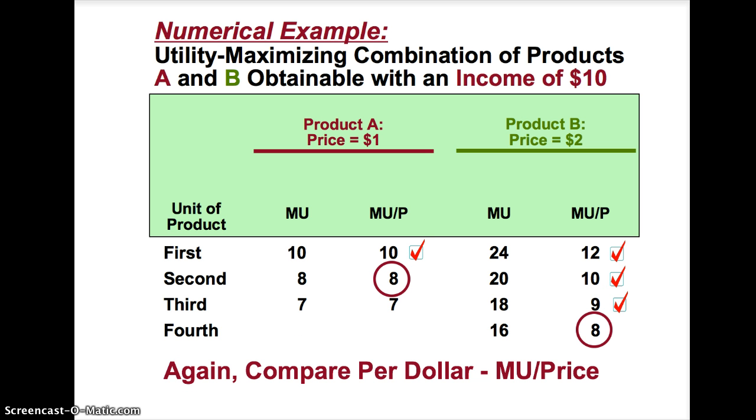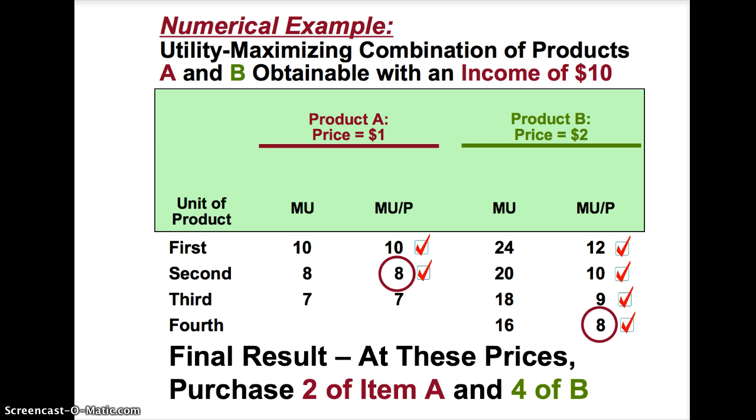The fourth unit of product B yields a marginal utility of 16. Therefore, marginal utility per dollar is 8. The consumer will purchase the fourth unit of product B and the second unit of product A. The consumer has spent all of their income. The final result is 2 units of product A and 4 units of product B.